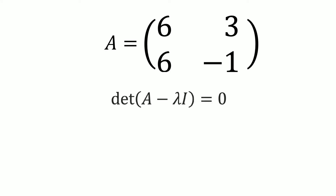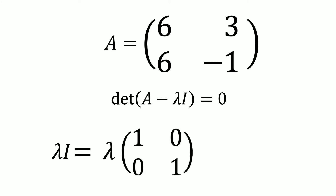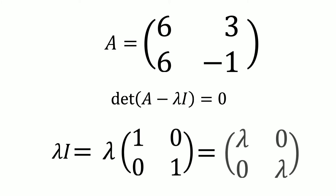Our goal is to solve for the values of lambda that satisfy the equation that the determinant of A minus lambda multiplied by the identity matrix equals 0. For this, we first need to find lambda multiplied by the identity matrix. This gives us the matrix with lambdas on the main diagonal and zeros everywhere else.